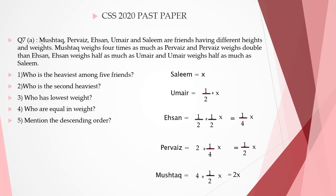Mushtaq, Parvez, Ehsan, Umair, and Salim are friends having different heights and weights. Mushtaq weighs 4 times as much as Parvez and Parvez weighs double than Ehsan. Ehsan weighs half as much as Umair and Umair weighs half as much as Salim. These are the questions we have to answer.